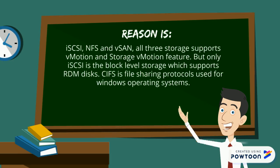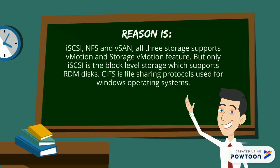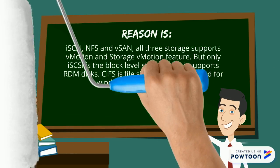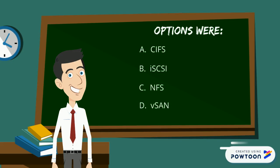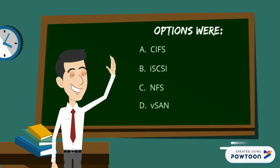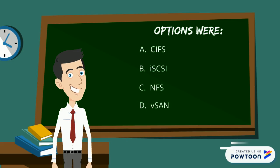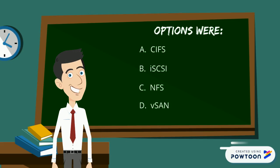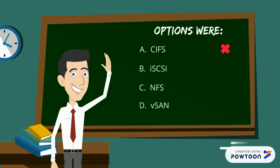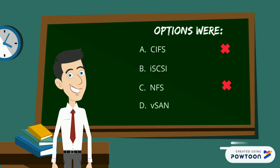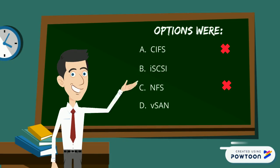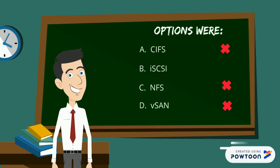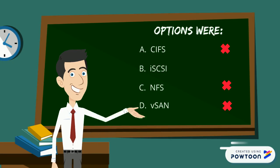CIFS is a file sharing protocol used for Windows operating systems. As we reviewed, CIFS and NFS are file sharing protocols, so they don't have RDM support. vSAN is object-based storage, which also does not support RDM.